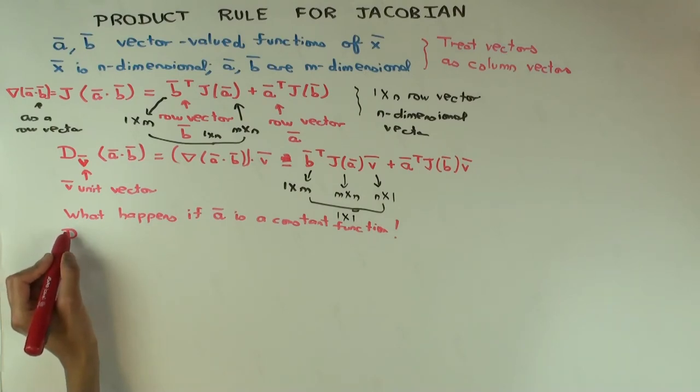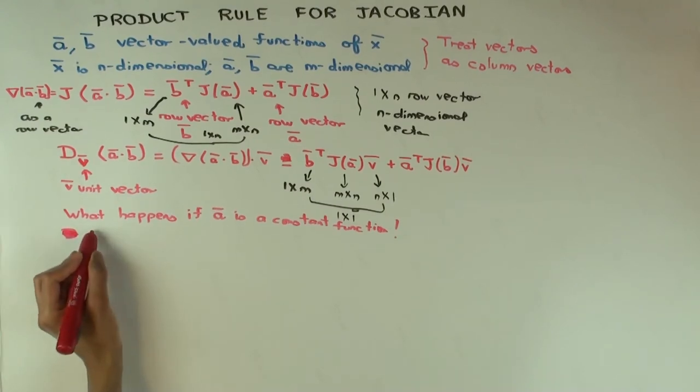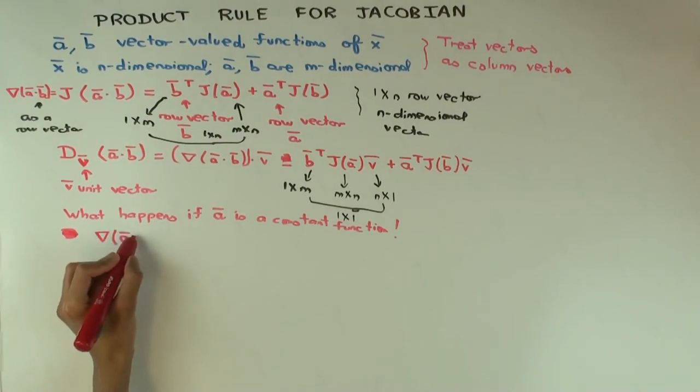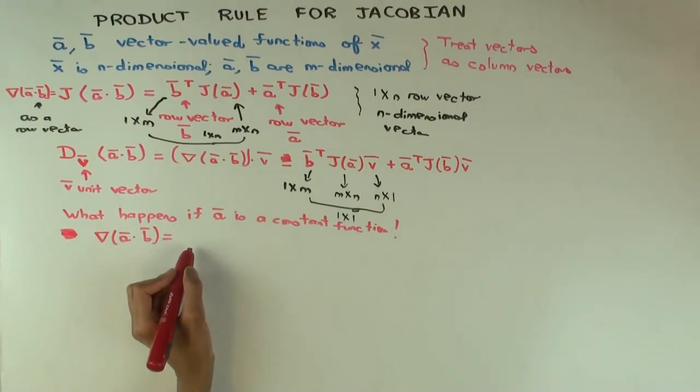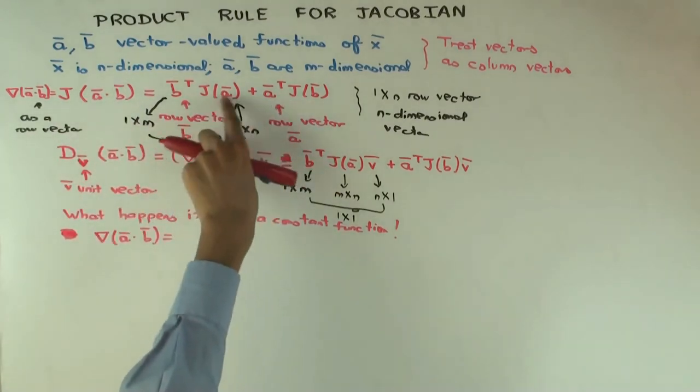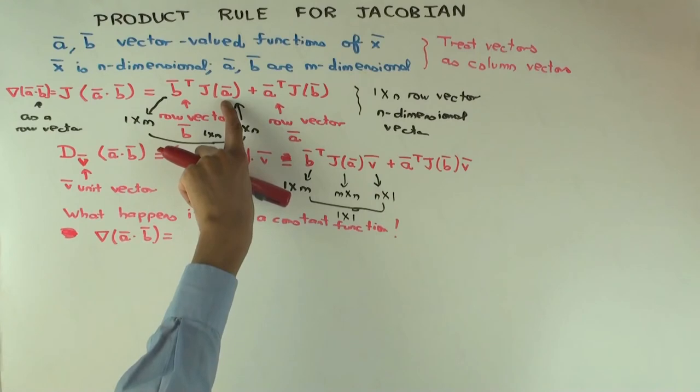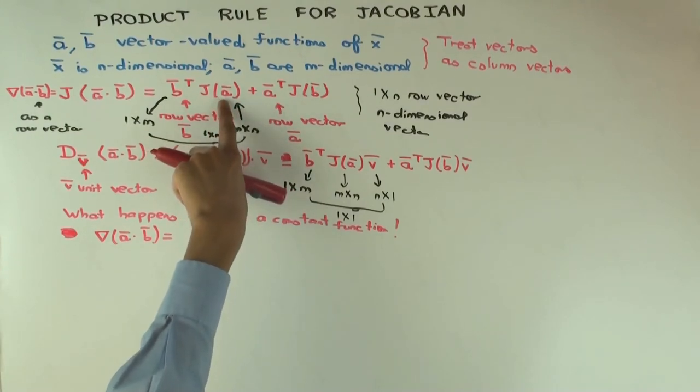Then what does this become? Actually, let's do the first one first, so let's do the nabla one first. So what is nabla a dot b going to be? What will happen when you use the fact that a is a constant vector? What's the Jacobian of a constant? What's the derivative of a constant? Zero. The Jacobian of a constant vector will be zero because each coordinate is constant, the gradient vector will be zero.